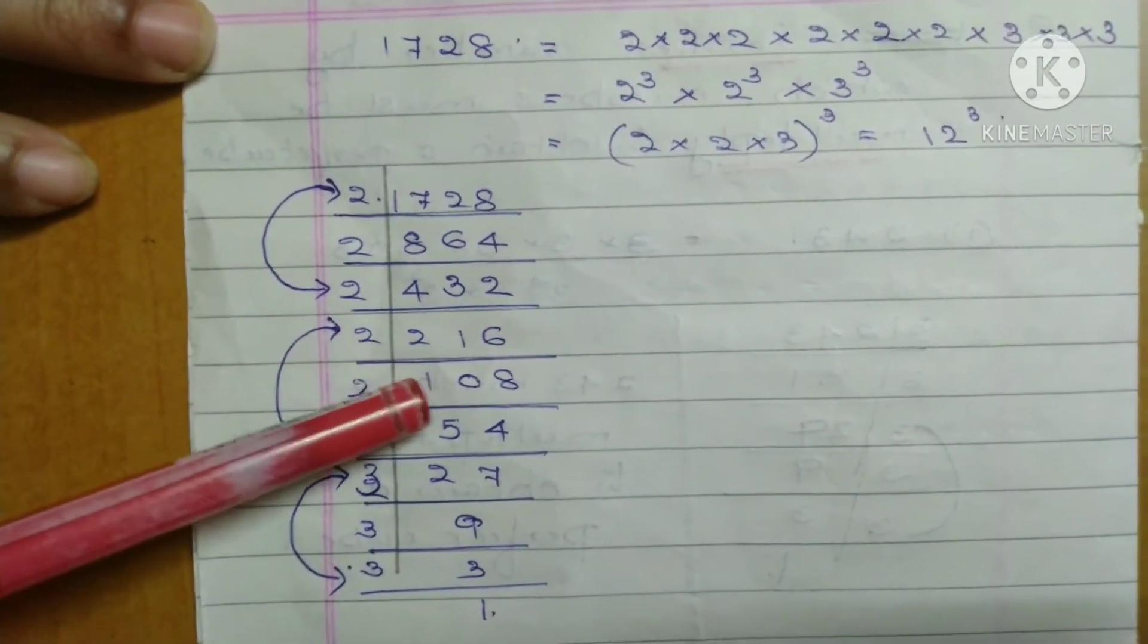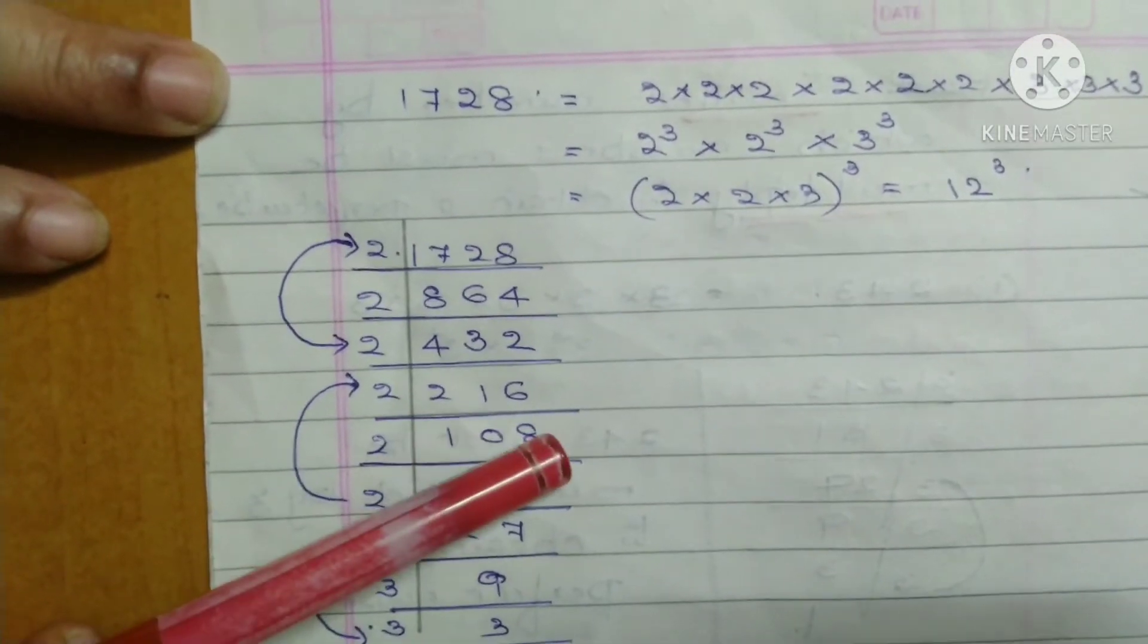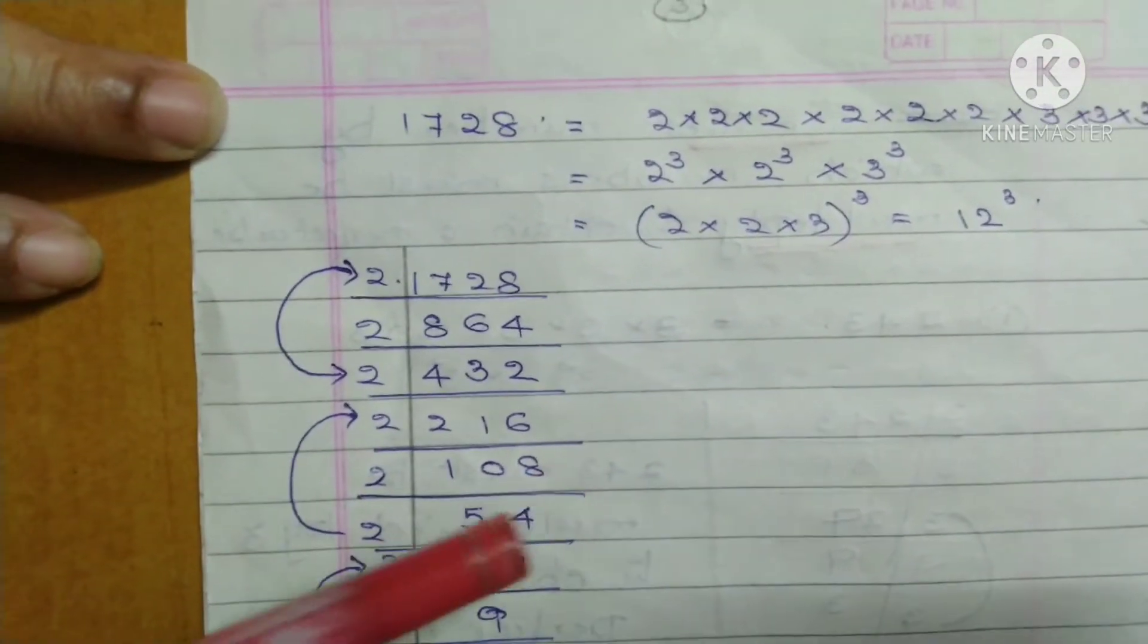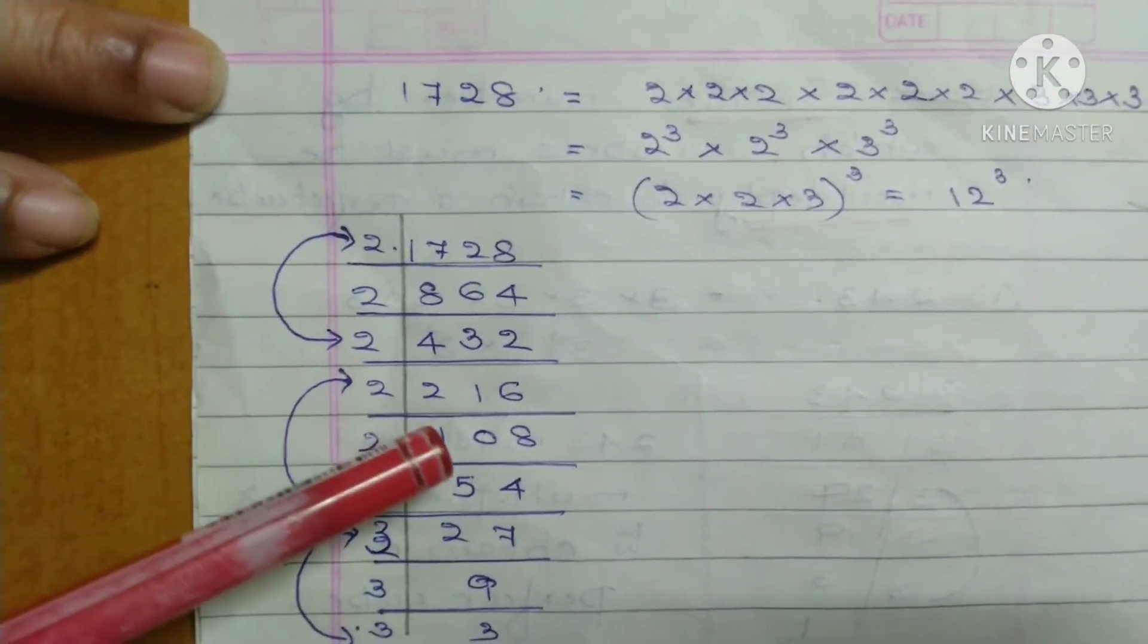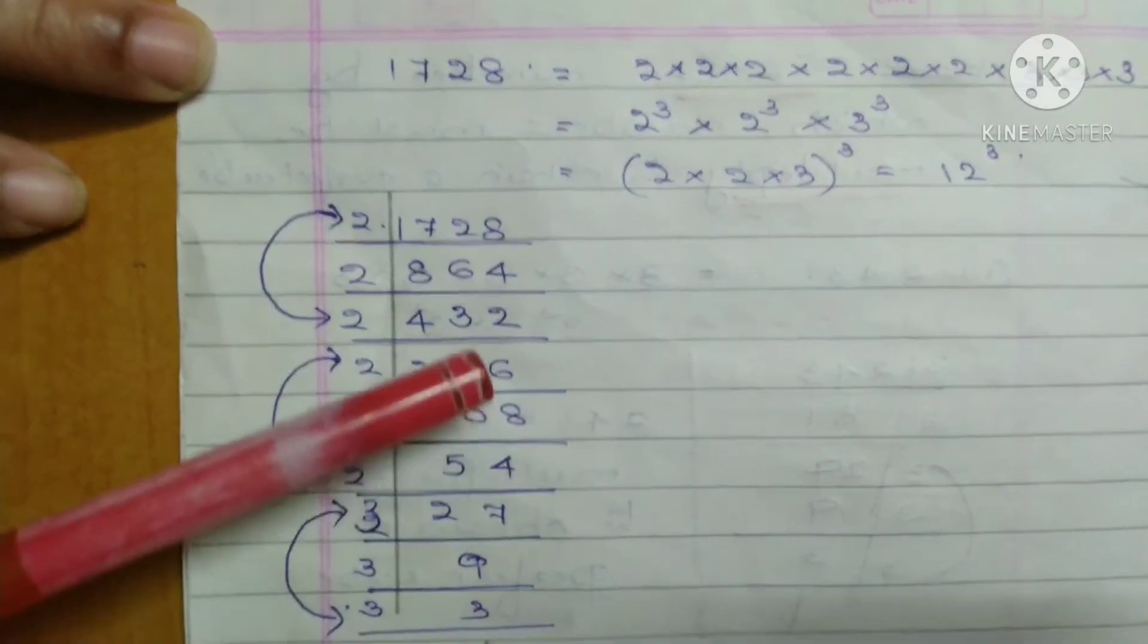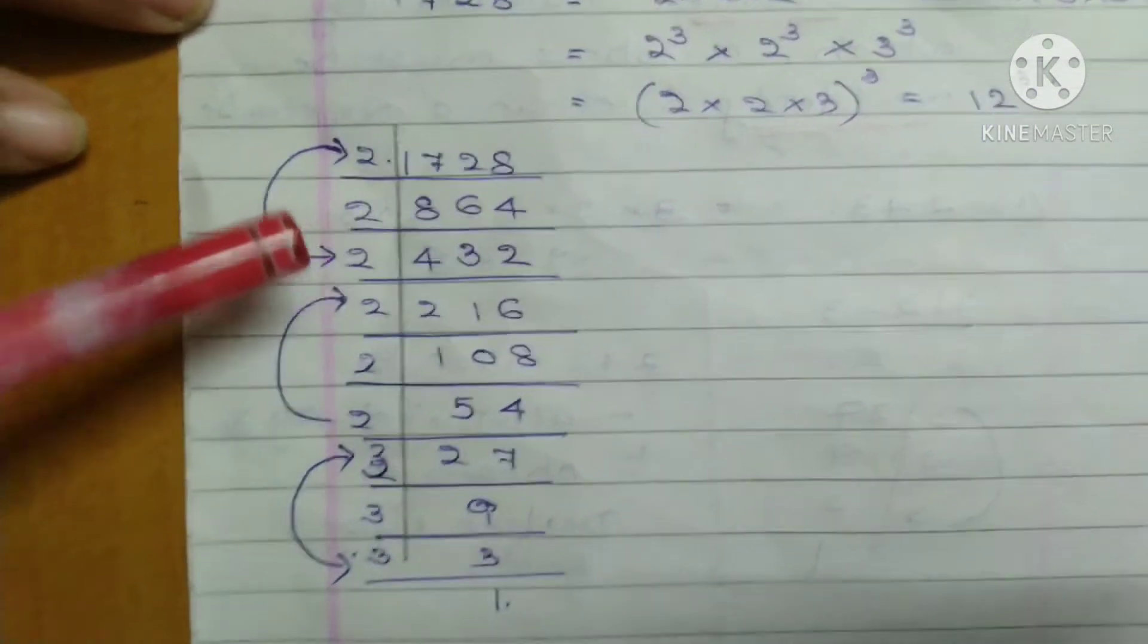Here you should be careful when dividing. Don't write 18. Most children write '1 times 2 is 2, 2 times 8 is 16,' but that's wrong.